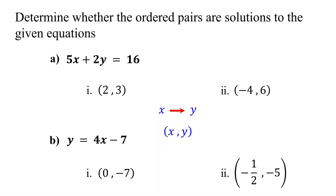To determine whether an ordered pair is a solution to a linear equation, first substitute the values of x and y from the ordered pair into the equation. Then simplify. If both sides of the equation are equal after simplifying, then the ordered pair is a solution. Otherwise, it is not a solution.